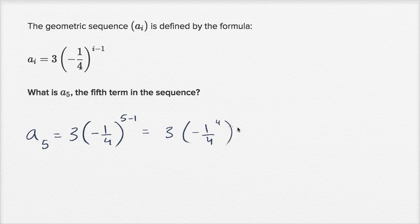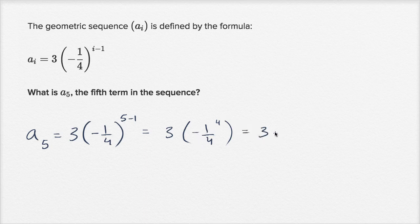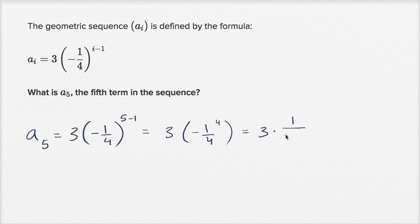That's going to be equal to — we're raising it to an even power, so it's going to give us a positive value, since we're multiplying the negative an even number of times. So it's going to be three times: one to the fourth power is just one, and four to the fourth power — four squared is 16, so 16 times 16 is 256.